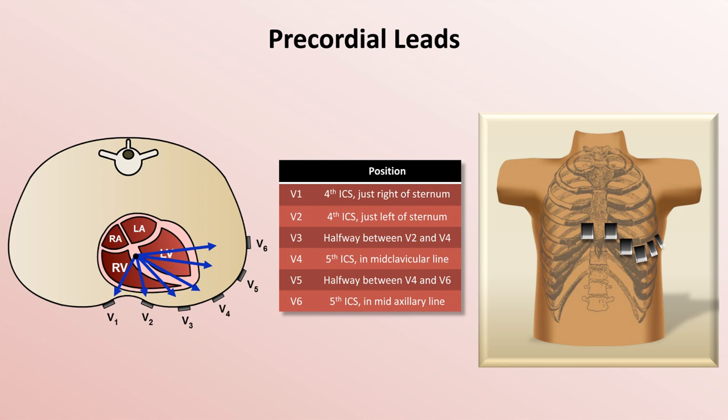Another frequent mistake is for V5 and V6 to not be lateral enough. While these errors won't lead to erroneous conclusions about the rhythm, and are unlikely to lead to erroneous conclusions about bundle branch blocks and ventricular hypertrophy, small misplacements of precordial electrodes can dramatically change the appearance of T-waves.